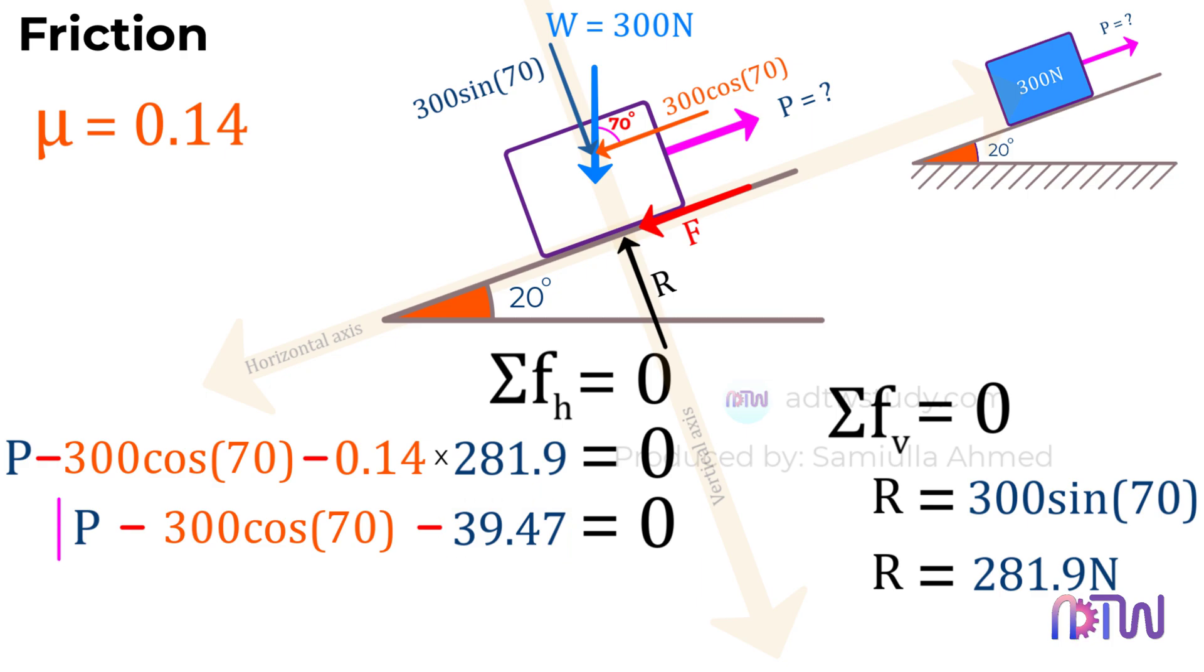Therefore, we get the force P, minus 300 cosine 70 degrees, minus 39.47 newtons. This, minus 300 cosine 70 degrees will be minus 102.6. If we further simplify, we get the force P equal to 142.07 newtons.